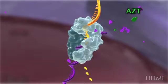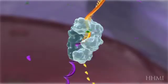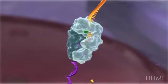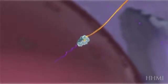But the difference is crucial because when AZT is incorporated into the DNA chain, the chain cannot be extended and the process shuts down. When that happens, the HIV life cycle is disrupted.